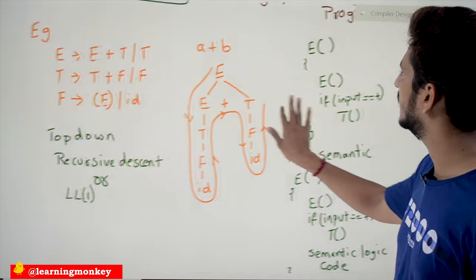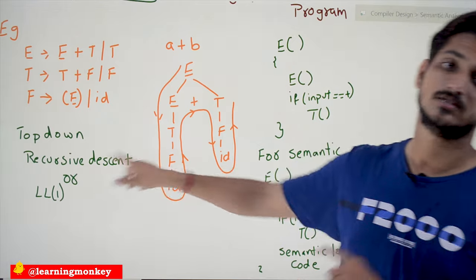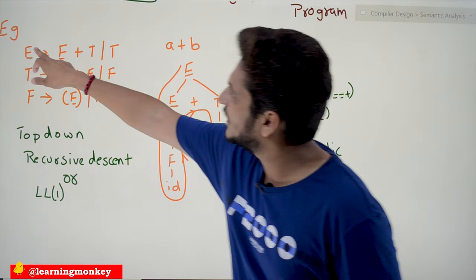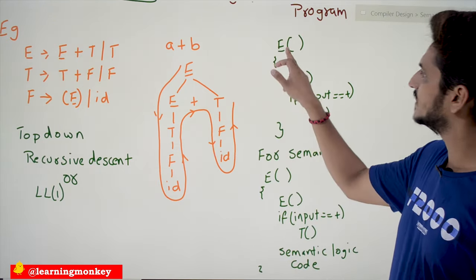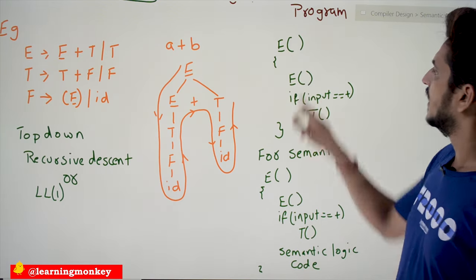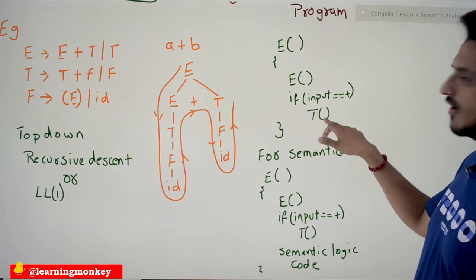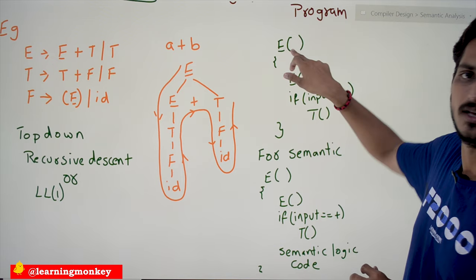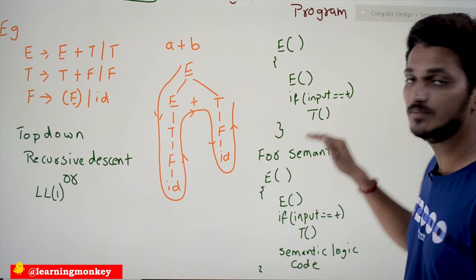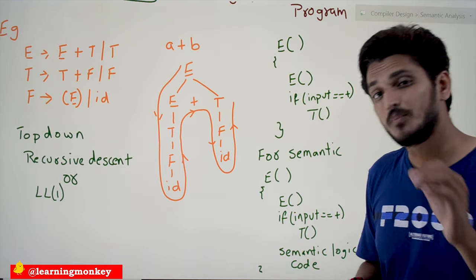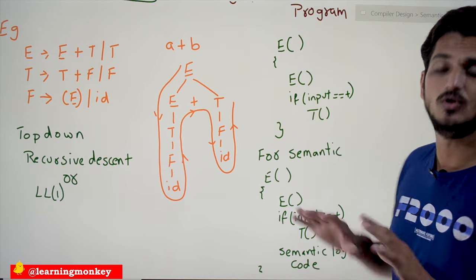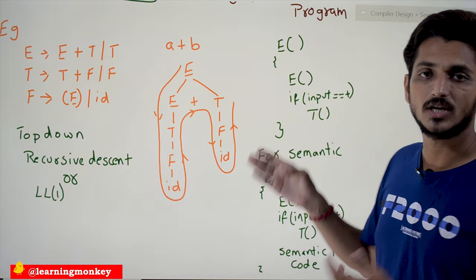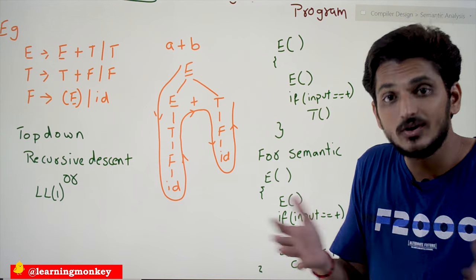When this E + T production has been processed, you can write the semantic logic here. In recursive descent parsing, for each non-terminal we write a function. E is a non-terminal, so we write a function for E. E calls e(), and if input equals plus, calls t(). After completion of this function, you can write the semantic logic. It is not compulsory to write it after the function — wherever you need to check, you can write the semantic logic according to your requirement.